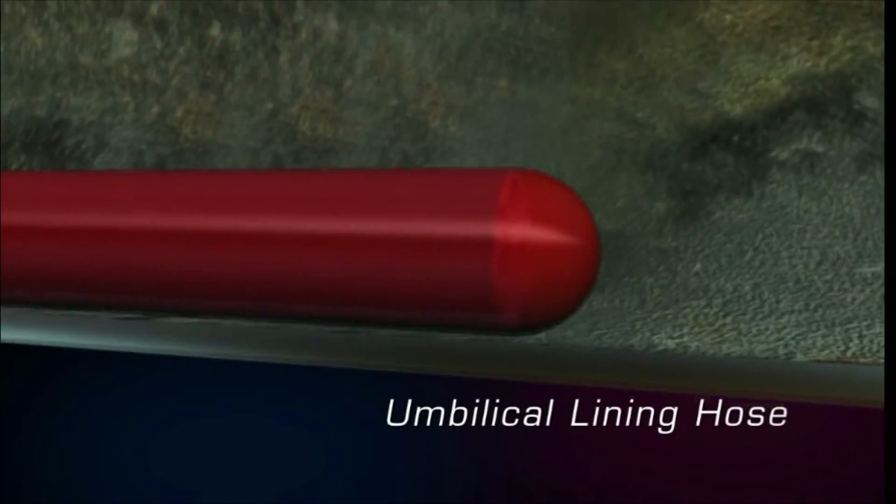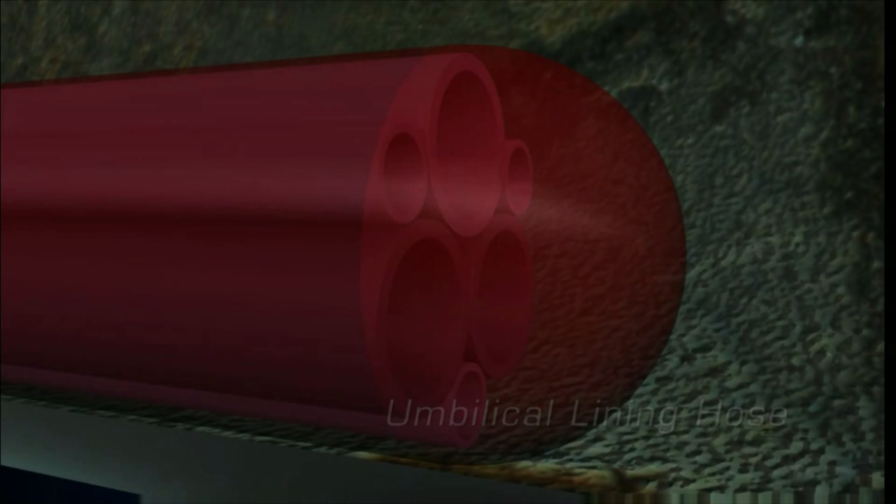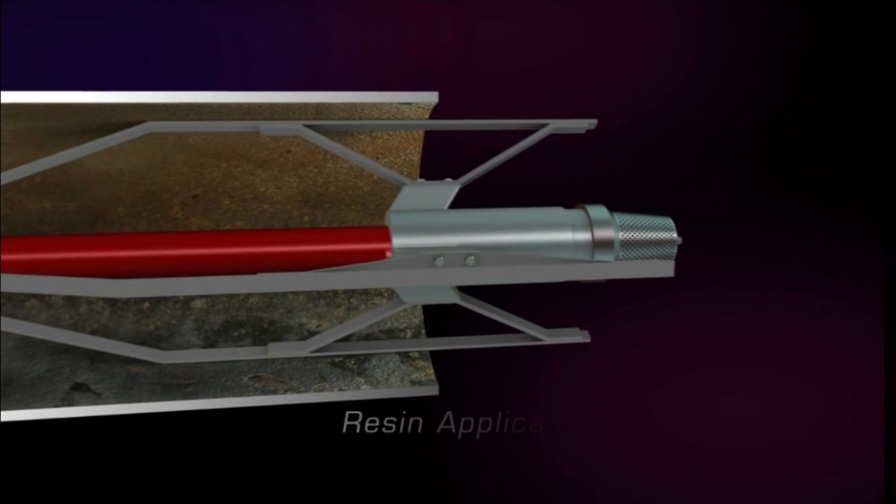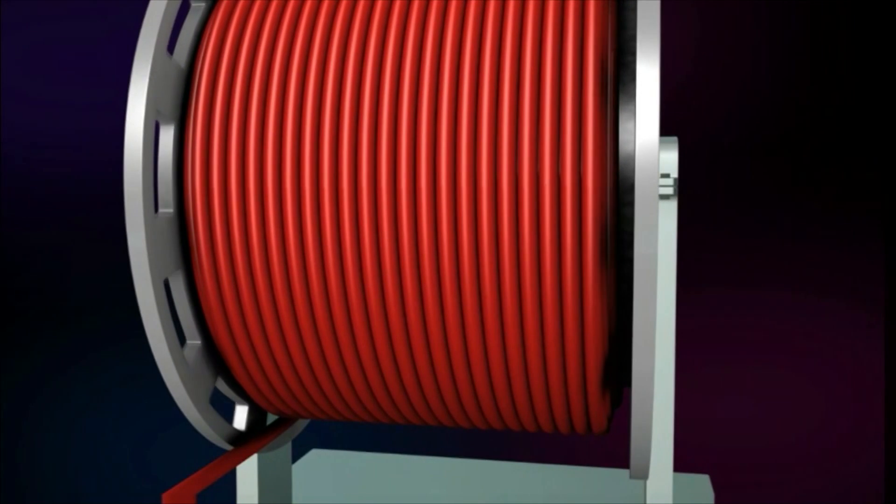An umbilical hose is then pulled from the lining rig through the pipe via a small access pit and opening in the pipe until it reaches the far end of the run. The static mixer and application spray head are then attached to the umbilical hose.